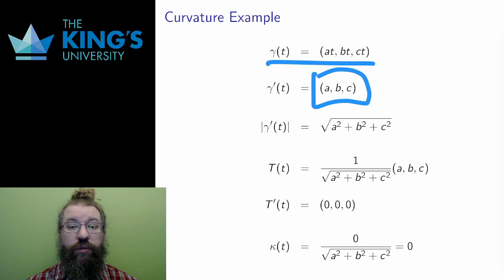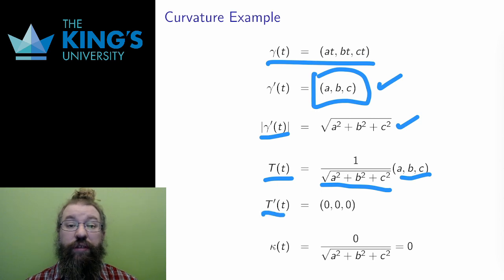First, I calculate the tangent. Then, I calculate the length of the tangent. The unit tangent is the tangent divided by its length. So here's the unit tangent, and then I differentiate the unit tangent. Though it looks complicated, everything here is constant, so the derivative is in fact zero.